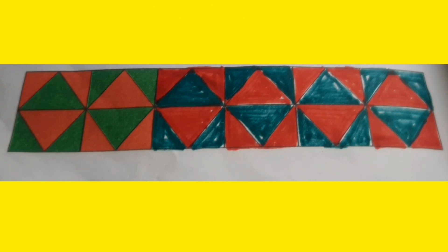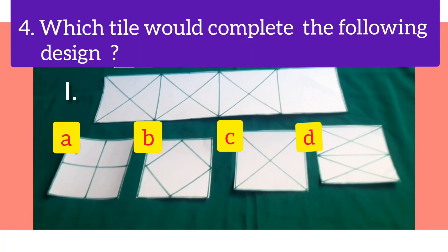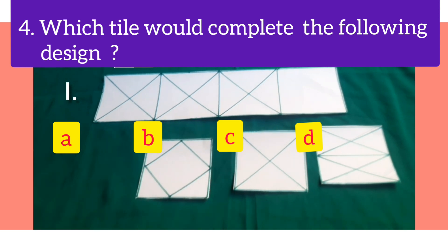Now, we will solve question number 4 of exercise 7.2. Which tile would complete the following design? Students, here 4 tiles are given and we have to choose the correct tile to complete the design. So, first we will keep the tile of option A to complete the design. So, does it match the design? No, it doesn't match the design.